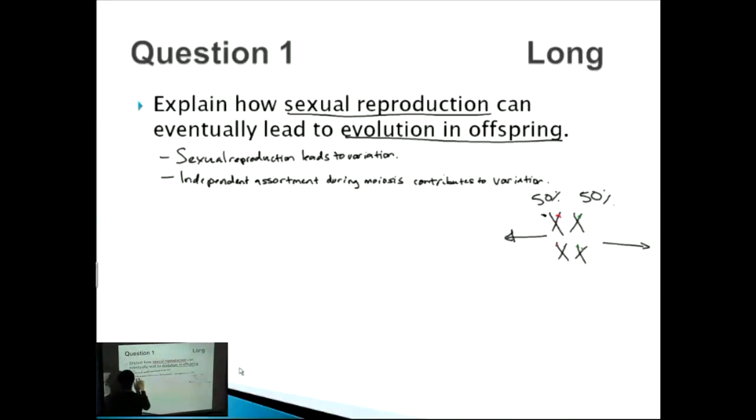The second one is called crossing over, which contributes to variation. Crossing over contributes to variation and this is also during meiosis as well.